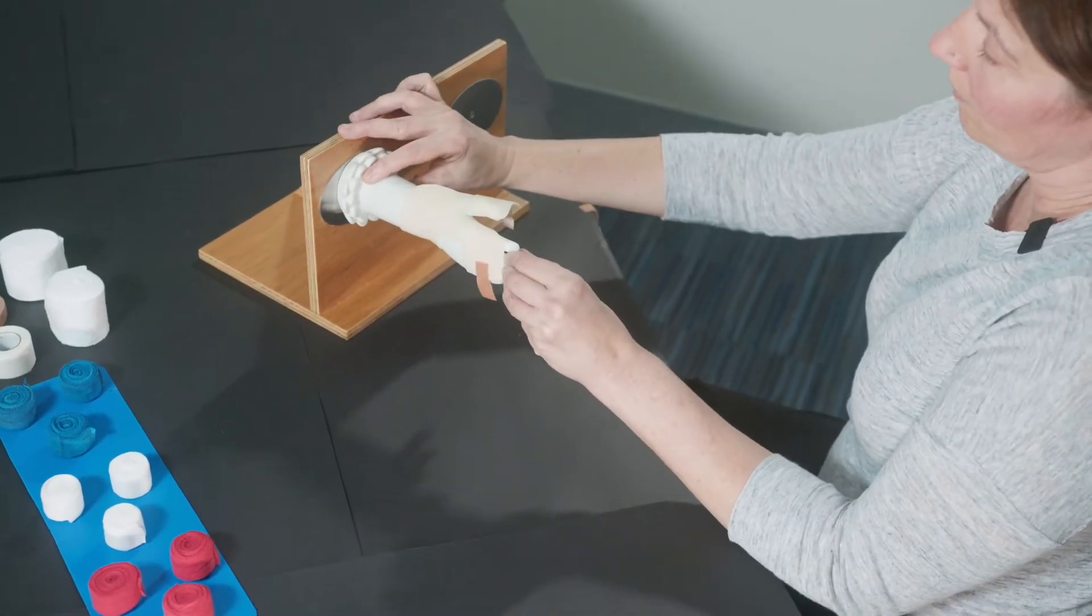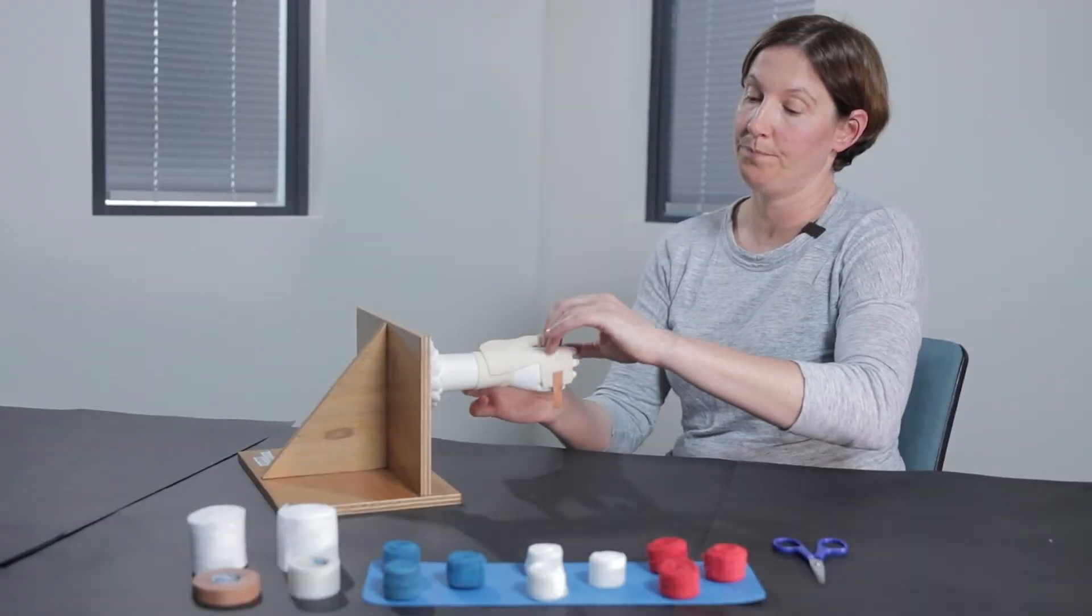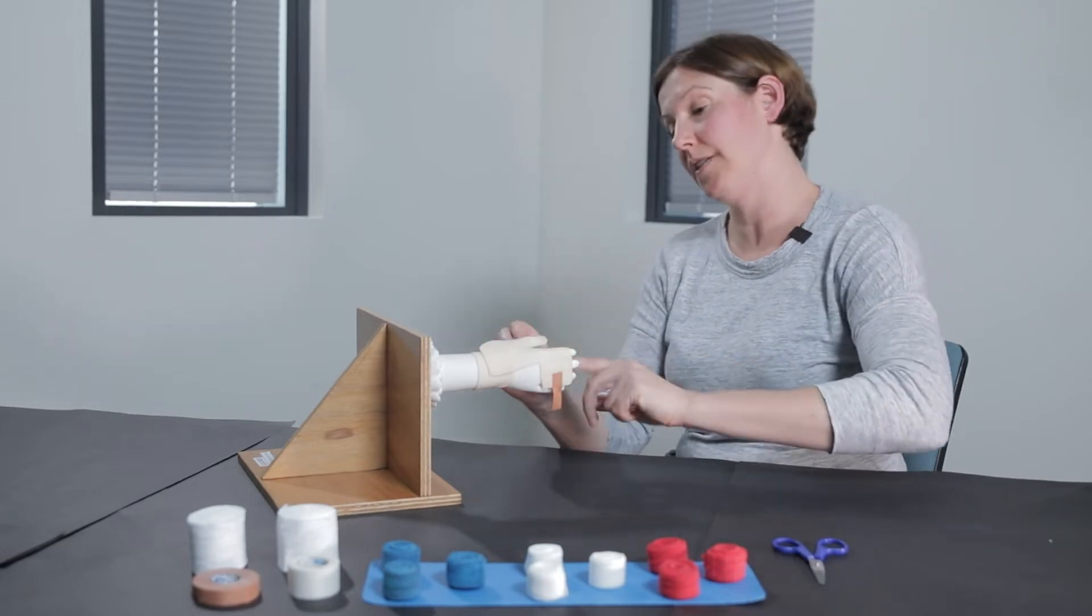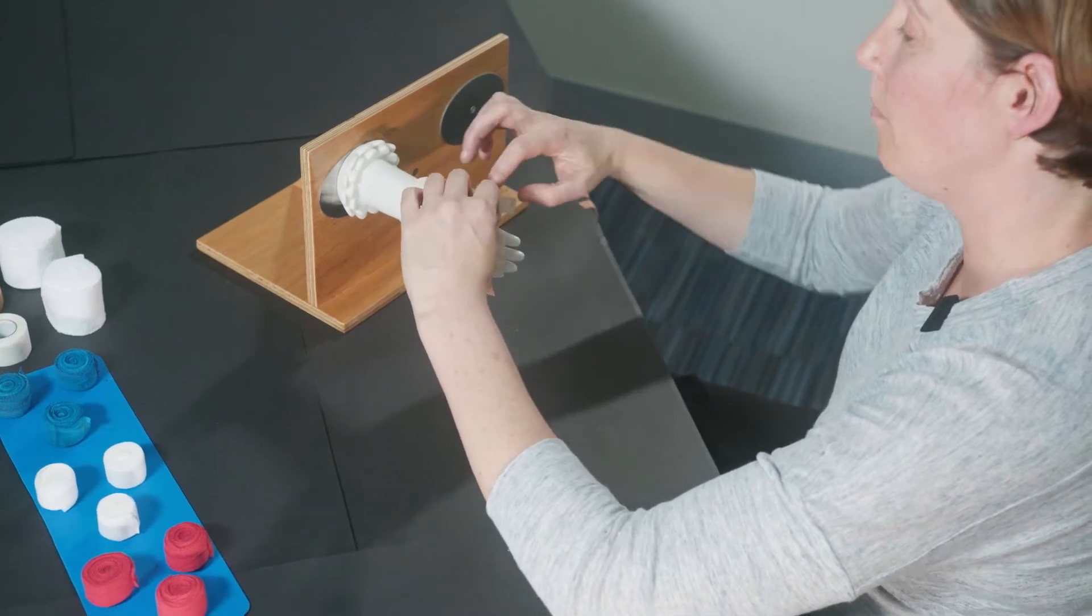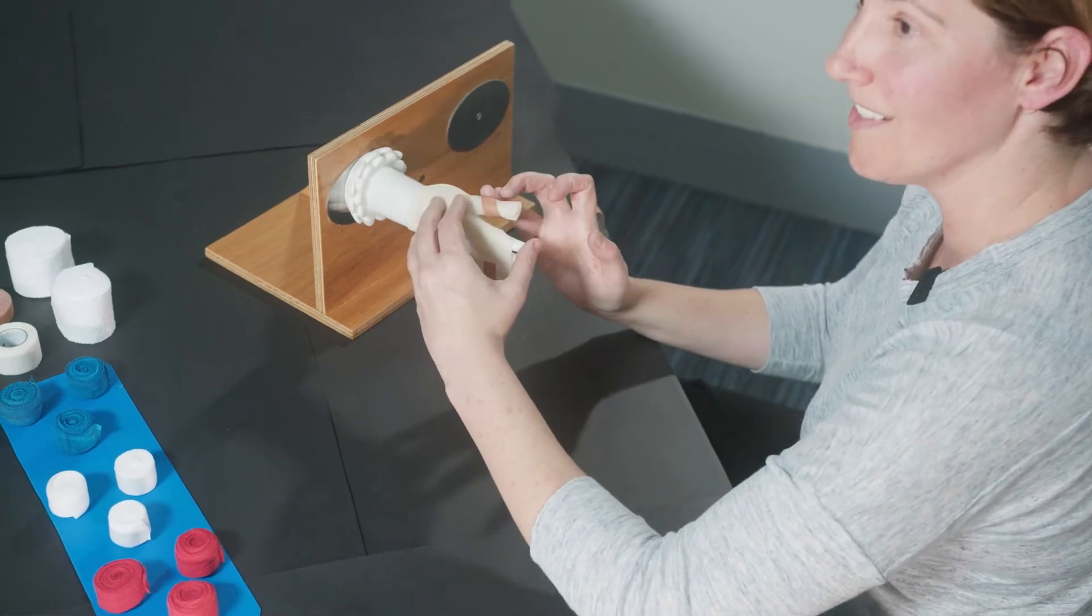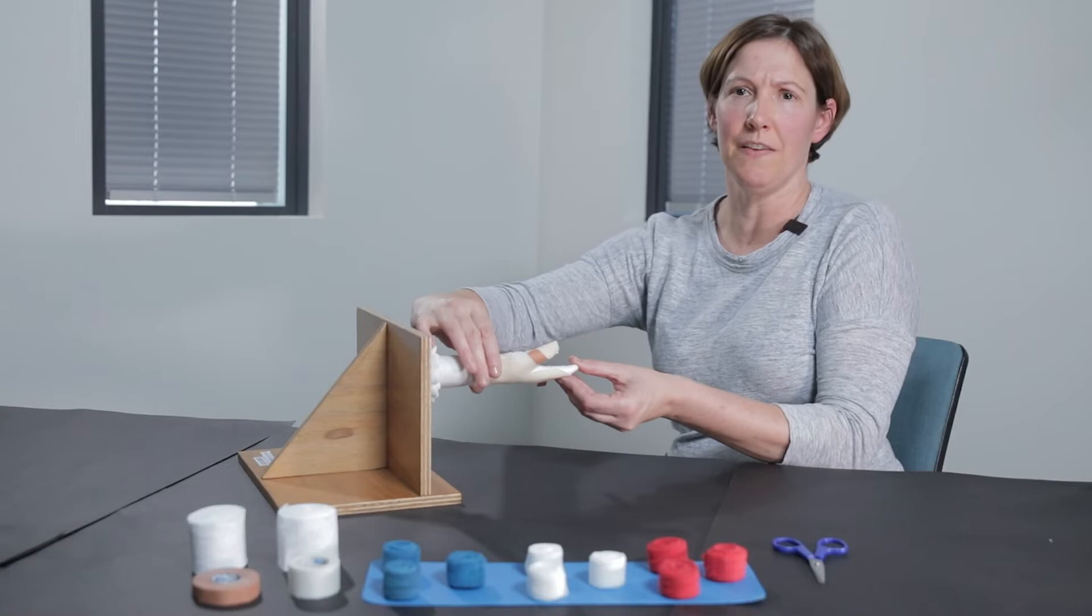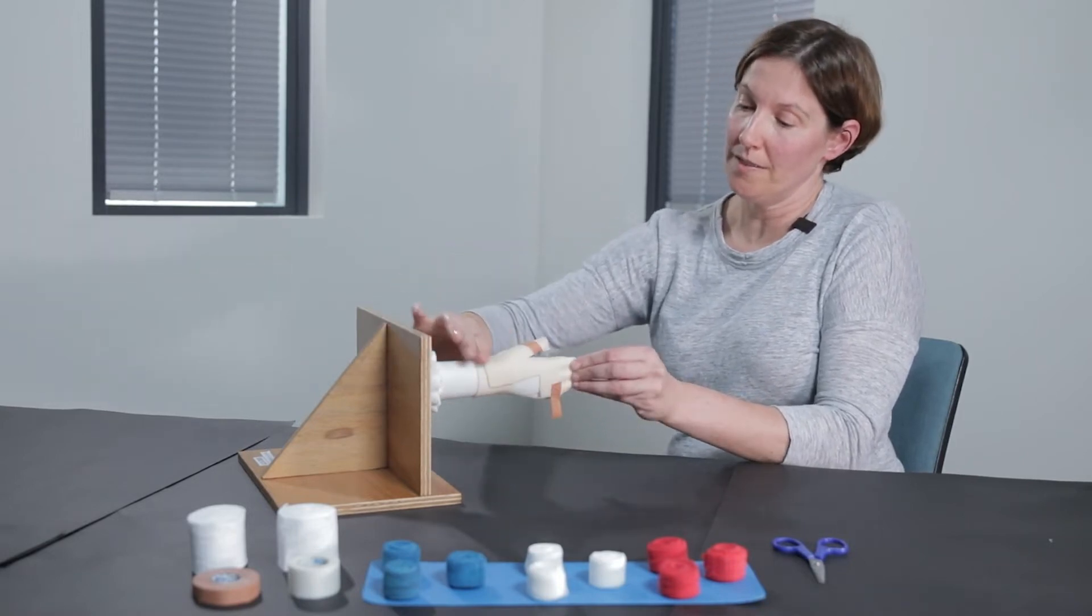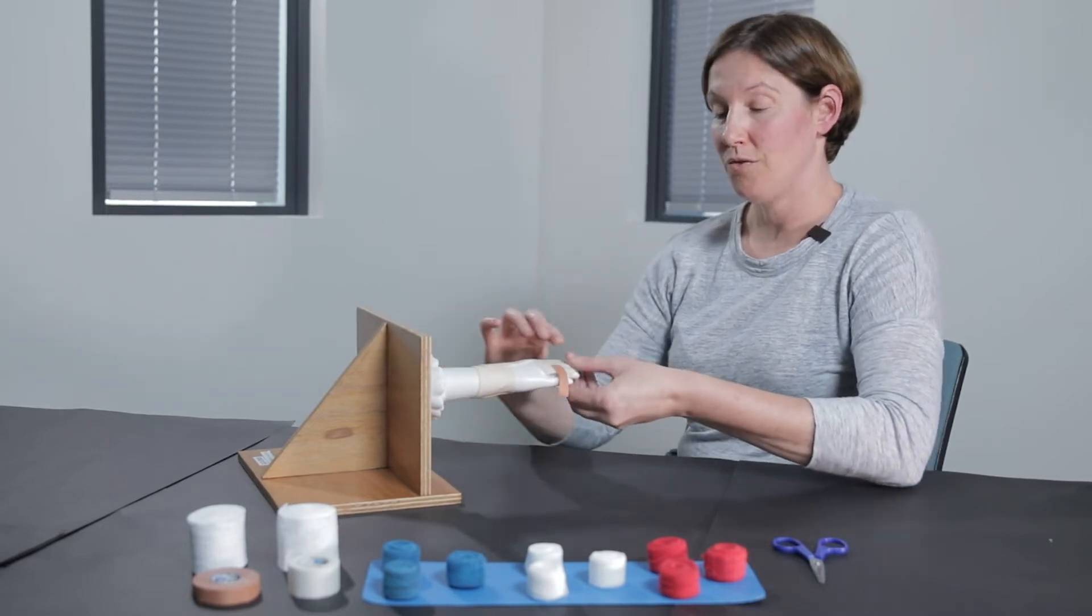I'm going to wrap that dressing around the thumb, making sure that I'm bringing that dressing all the way around and making sure that the tape isn't touching the skin. Now you can already see that this is a little bit fiddly, and it is going to be fiddly at home too. Take your time, and if your template doesn't seem quite right, just stop, adjust your template, and try again.